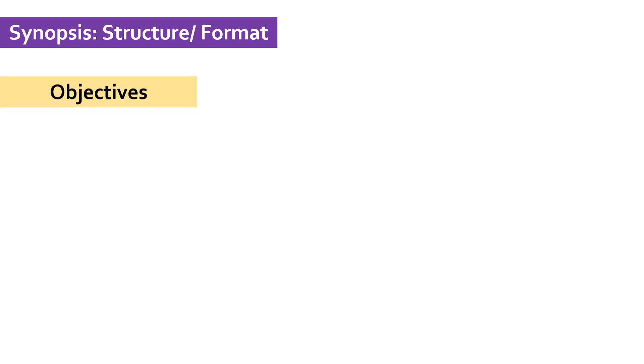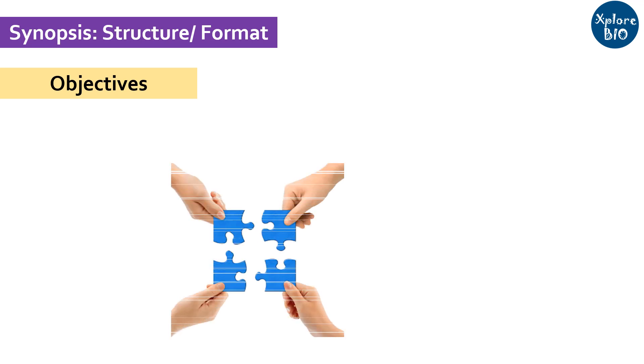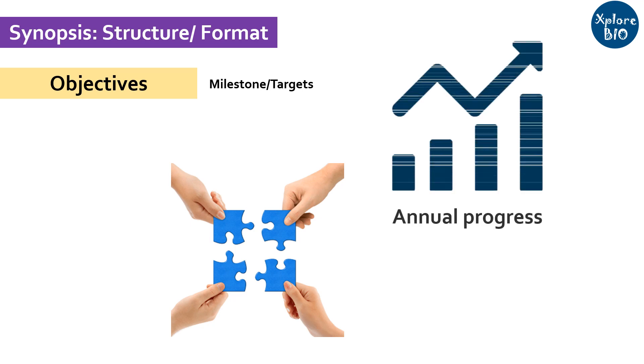Next, you write the objectives. Usually two to three clear objectives of your proposed work should be mentioned. Objectives breaks your whole research into smaller quantifiable chunks. Usually, the progress made under each objective during the PhD has to be shown in yearly assessment reports.